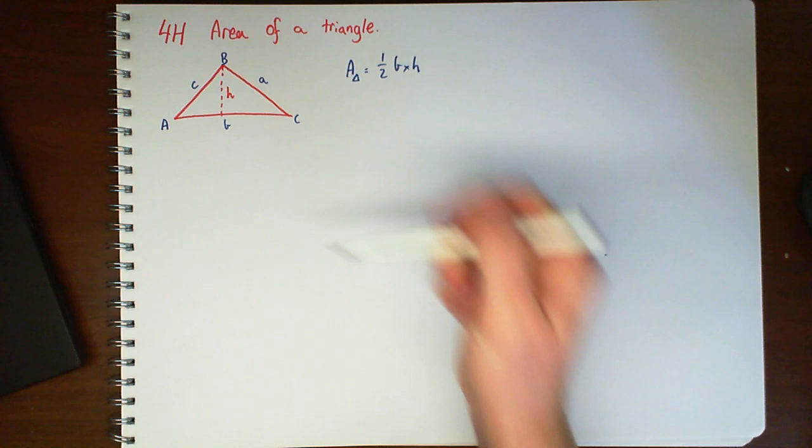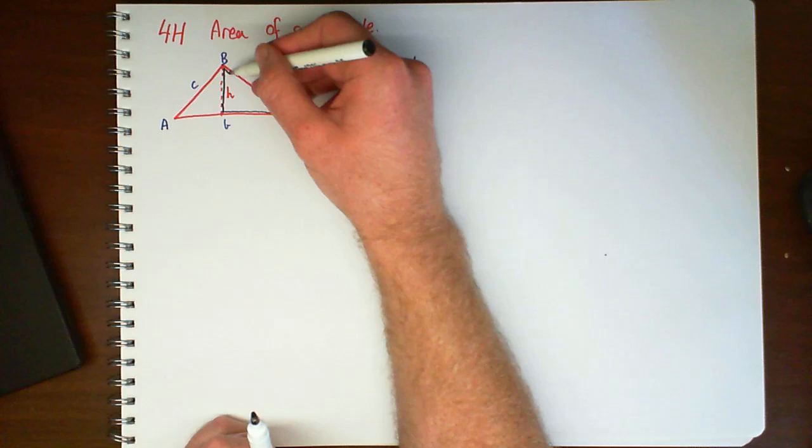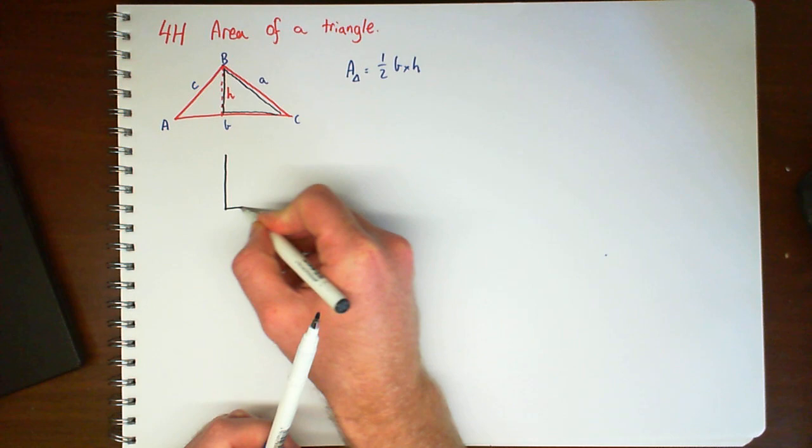And what I'm going to do is take this right angle triangle out of the whole triangle. So if I redraw it down here,